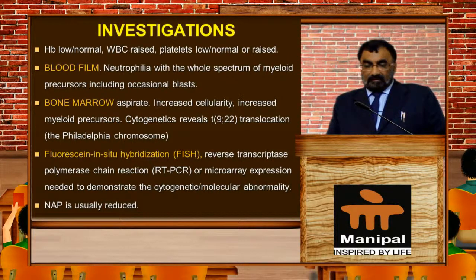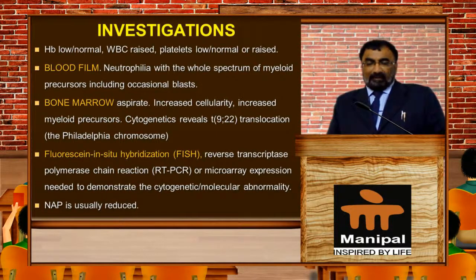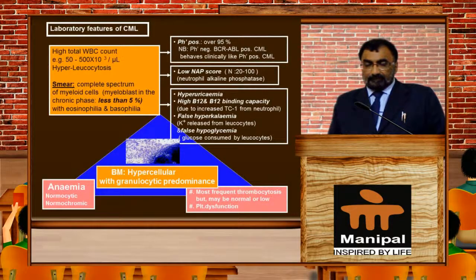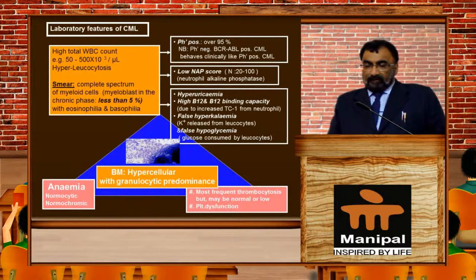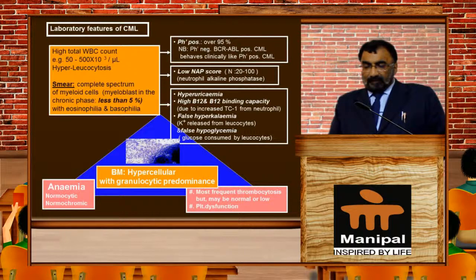Other tests include fluorescence in situ hybridization — also called FISH — reverse transcriptase polymerase chain reaction, and microarray expression analysis, needed to demonstrate cytogenetic or molecular abnormalities. NAP — neutrophil alkaline phosphatase — is usually reduced. These laboratory features are suggestive of CML, with a low NAP score, hypercellular bone marrow, and features of anemia.